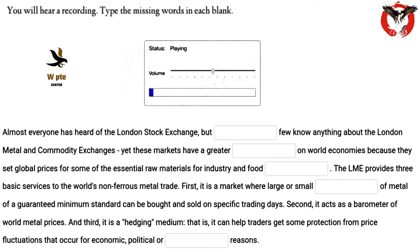Almost everyone has heard of the London Stock Exchange, but relatively few know anything about the London Metal and Commodity Exchanges. Yet these markets have a greater influence on world economies because they set global prices for some of the essential raw materials for industry and food manufacture. The LME provides three basic services to the world's non-ferrous metal trade.